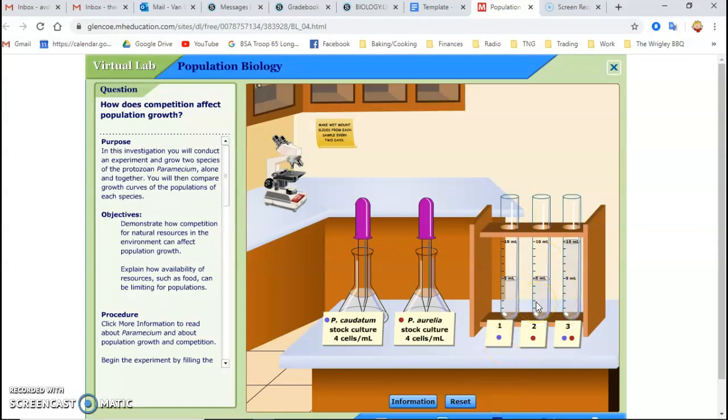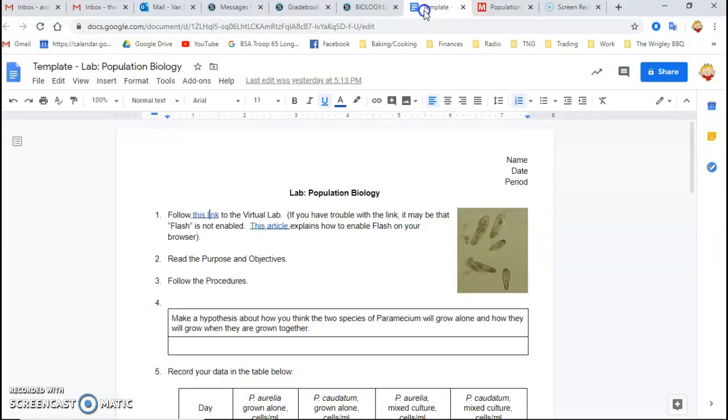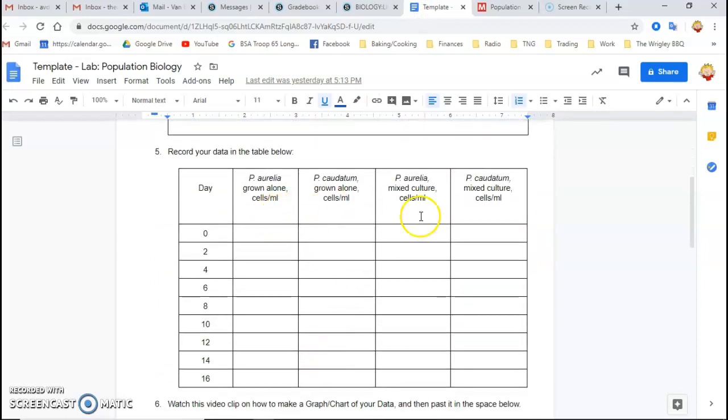That's a hypothesis. Make a hypothesis of what you think we're going to see in the data. So after you make that hypothesis, you're then going to record your data in this data table here. And in each one, you're recording the number of cells per milliliter for each species grown alone. That's test tube one, test tube two,